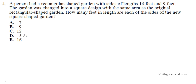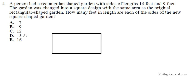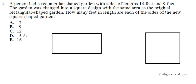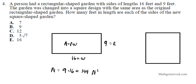Let's take a look at question number four. A rectangular-shaped garden has sides of length 16 feet and 9 feet. The garden was changed into a square design with the same area. The area of the rectangular garden is length times width, so 9 times 16, which is 144 square feet.